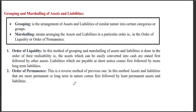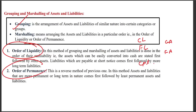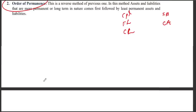Grouping and marshalling of assets and liabilities: grouping means classifying assets and liabilities into groups. There are two orders of arrangement. In the order of liquidity, assets are listed from most liquid to least liquid — current assets first, then fixed assets; and liabilities as current liabilities first, then long-term liabilities, with capital last. In the order of permanence, fixed assets come first, followed by current assets; and on the liabilities side, capital comes first, then long-term liabilities, then current liabilities.